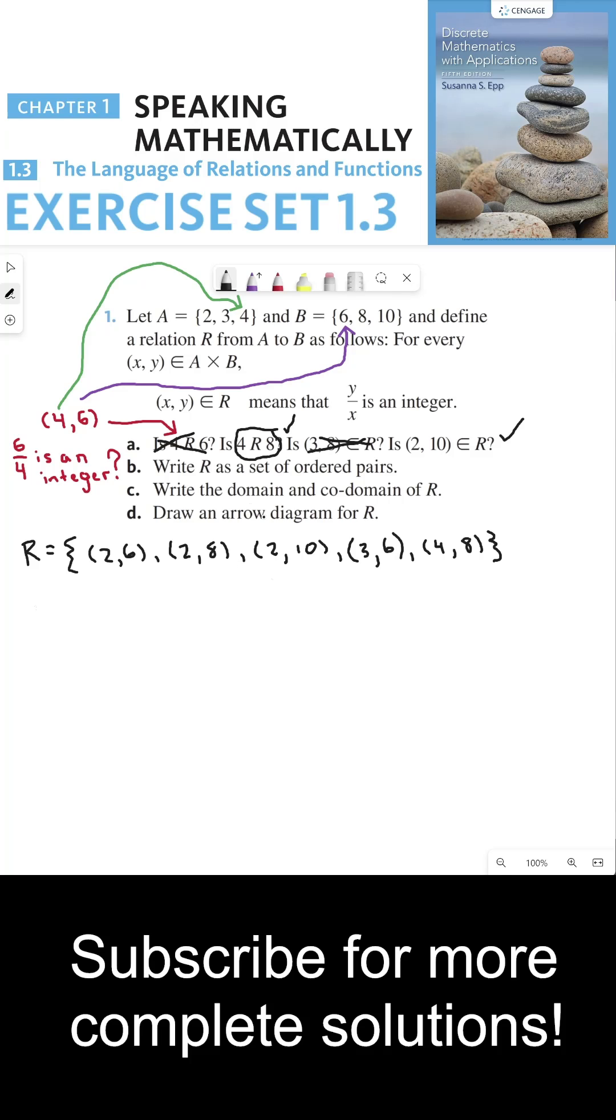For part C, write the domain and the codomain of R. So my domain is the set of all of my elements in the first position of these ordered pairs. So that includes 2, 3, and 4. So in this case, my domain is the whole set A. My codomain is the set of all elements that are in the second coordinate of my ordered pairs, which is 6, 8, and 10.